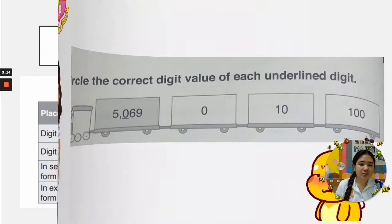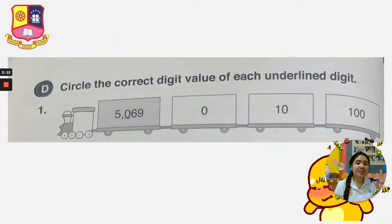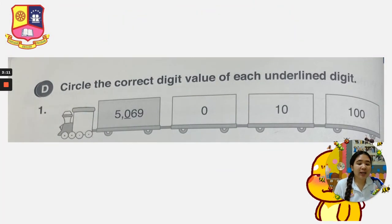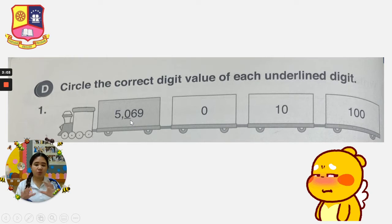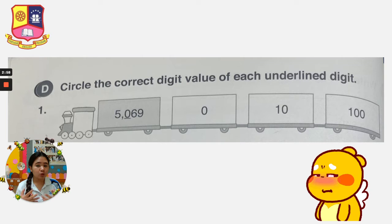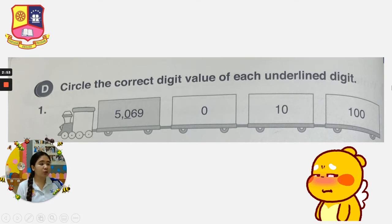Let's go to the exercises. Circle the correct digit value of each underlined digit. The underlined digit in number 1 is 0. In any place value, if there is a 0 and you are asked what the digit value is, it is always 0. If the digit is 0, then the digit value is also 0.